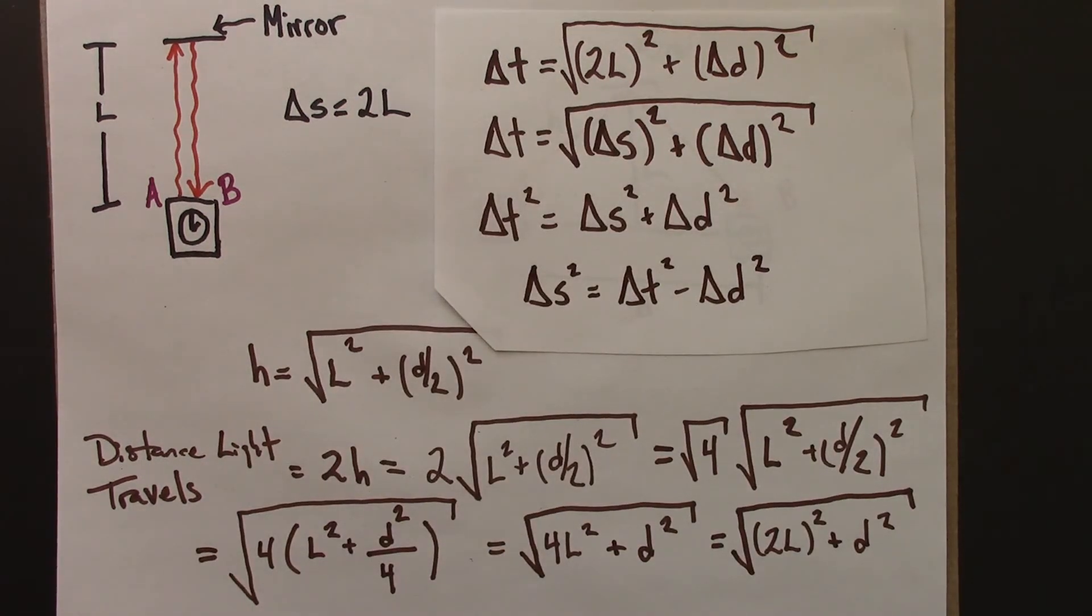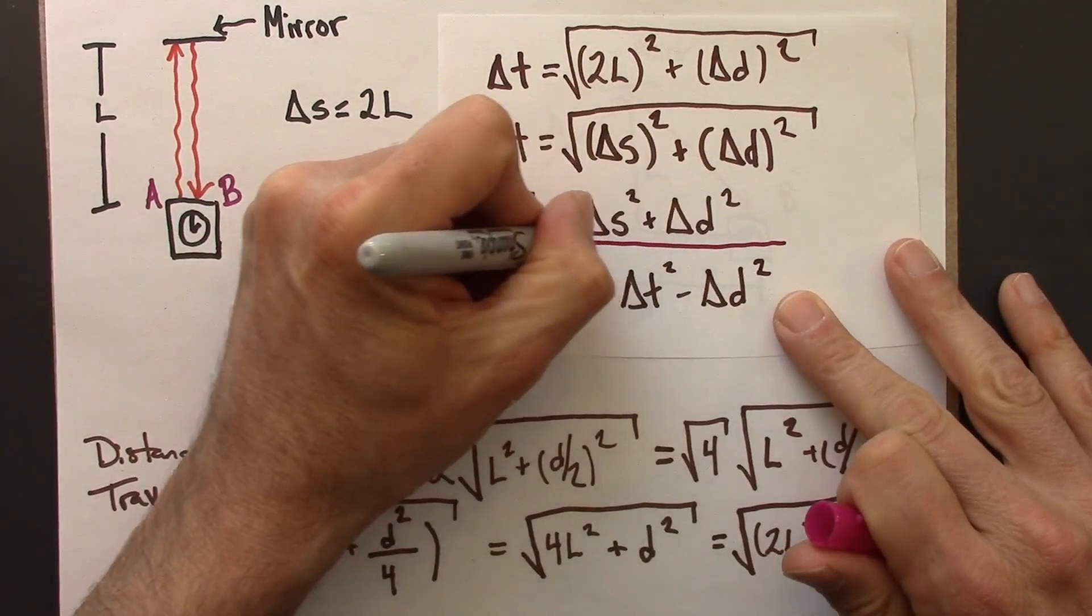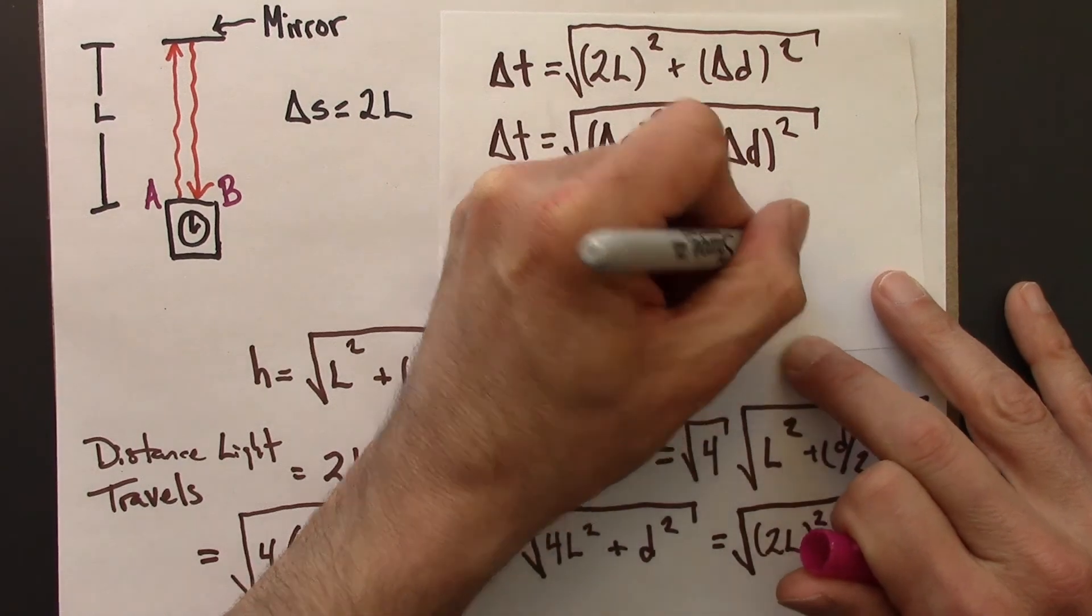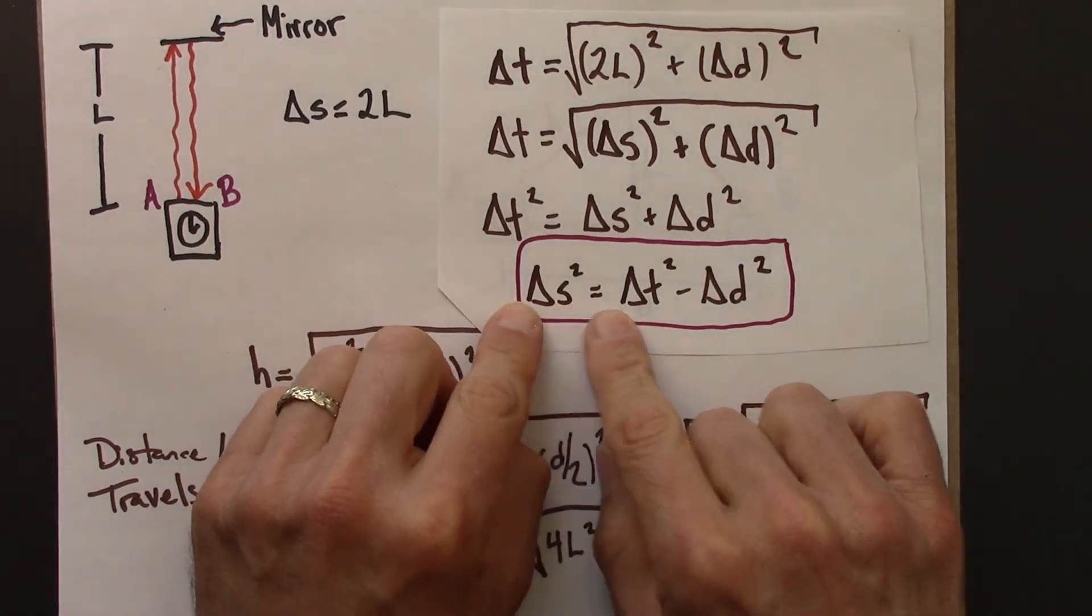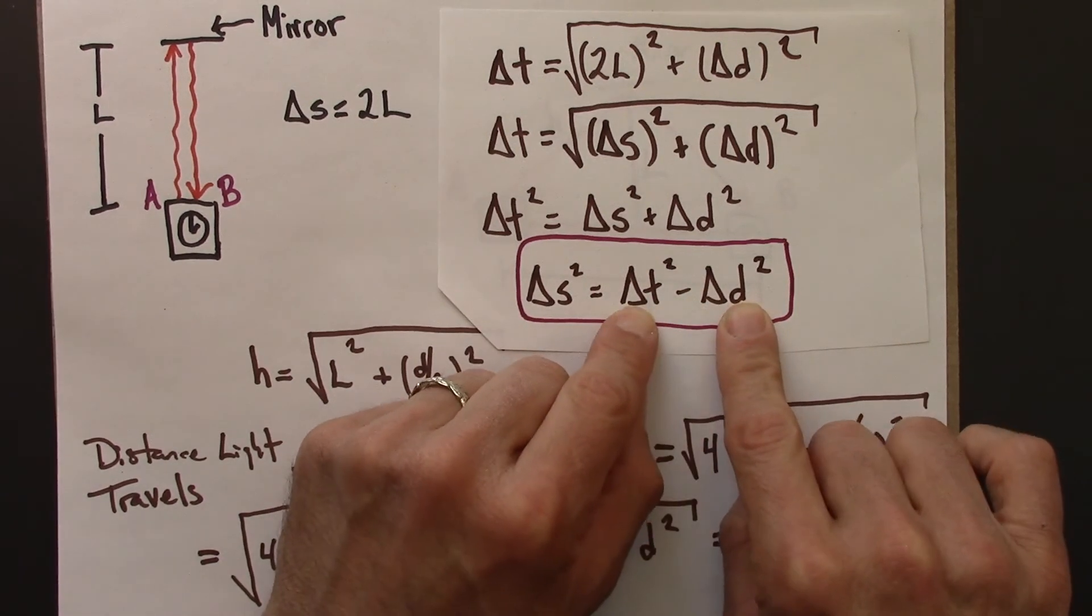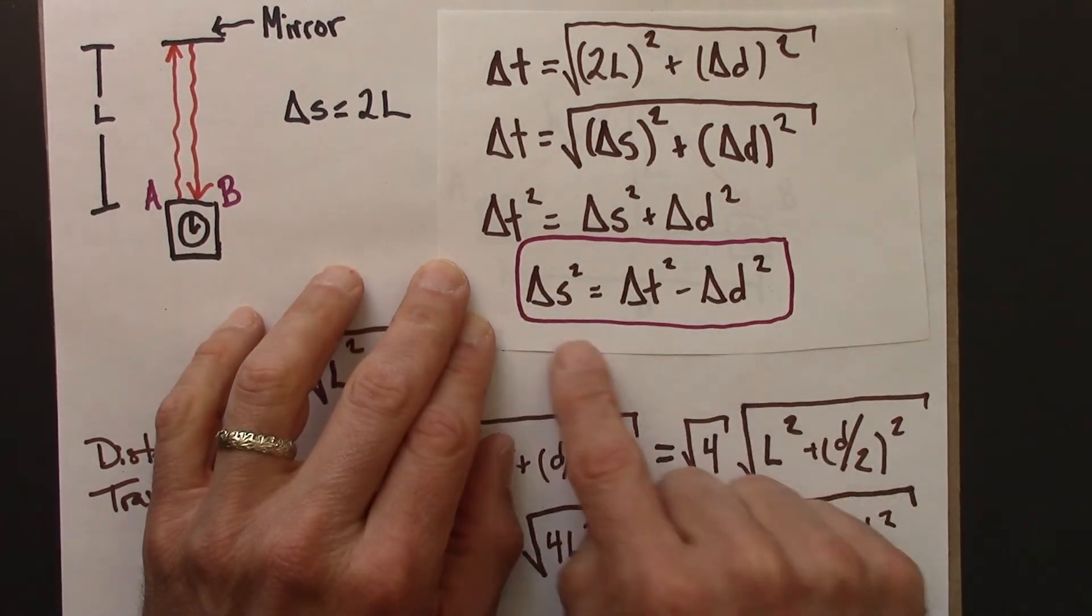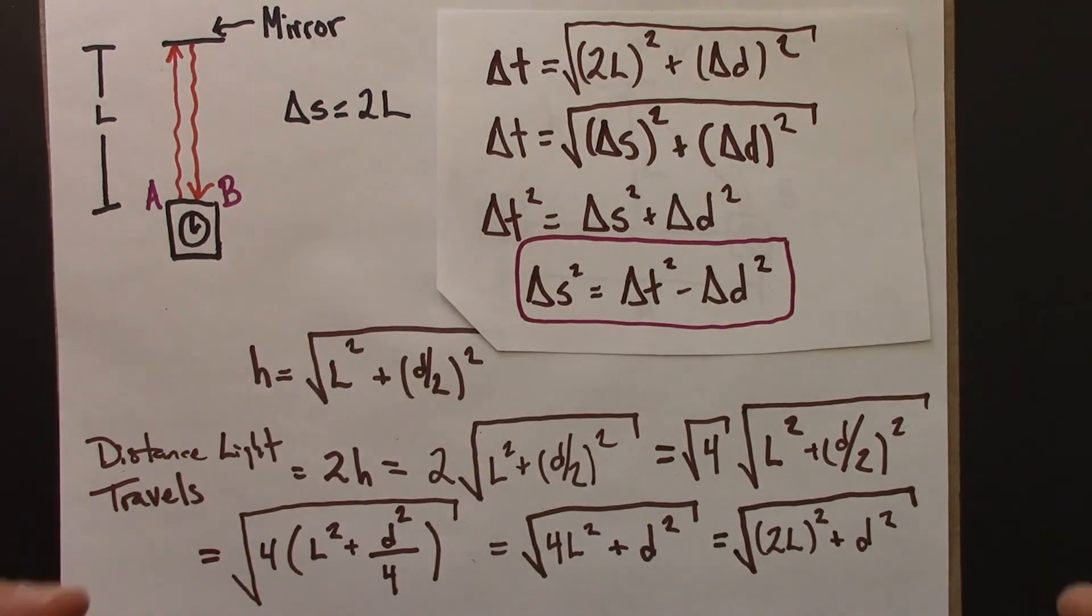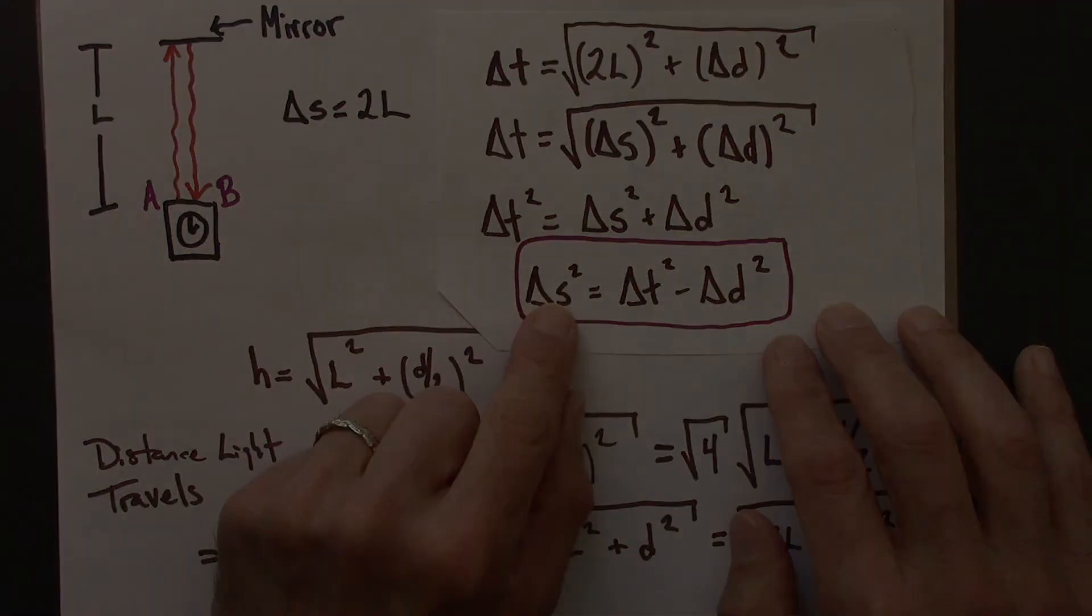And this is the metric equation. This is a formula that tells us how to calculate the spacetime interval if we know its spatial separation and its time separation in any inertial reference frame. So this is like the Pythagorean theorem. The Pythagorean theorem tells us how to measure distance given a ΔX and a ΔY. This tells us how to measure the spacetime interval given a ΔD or a ΔX and a ΔT.